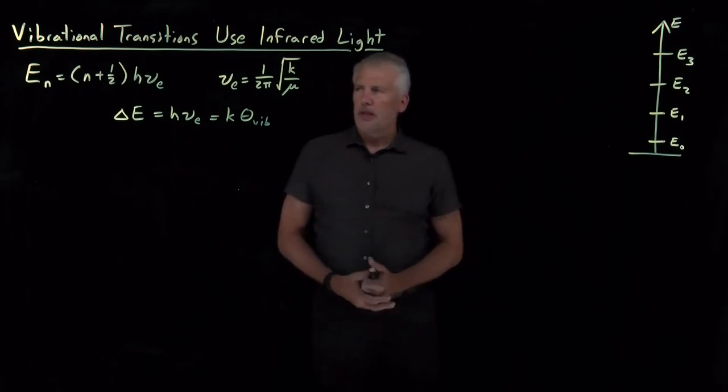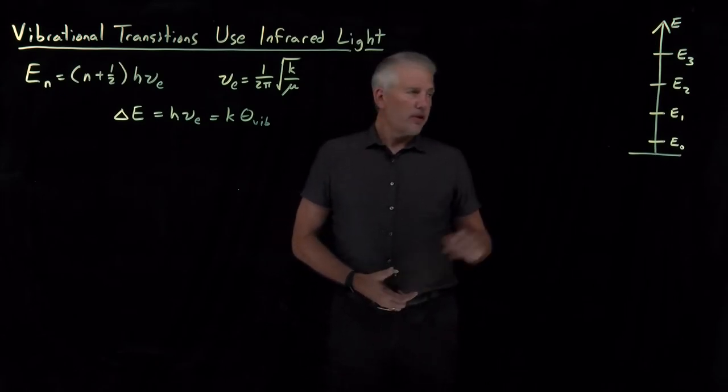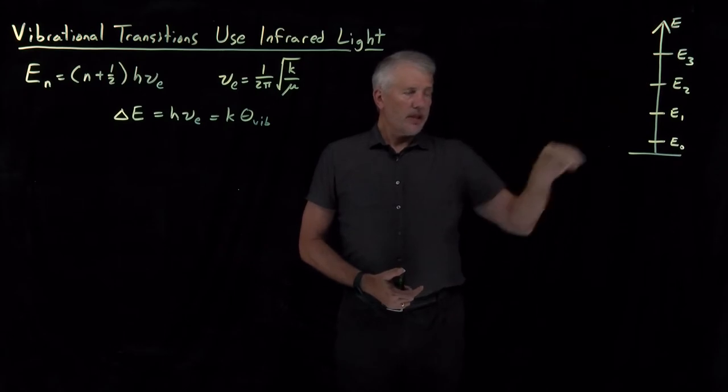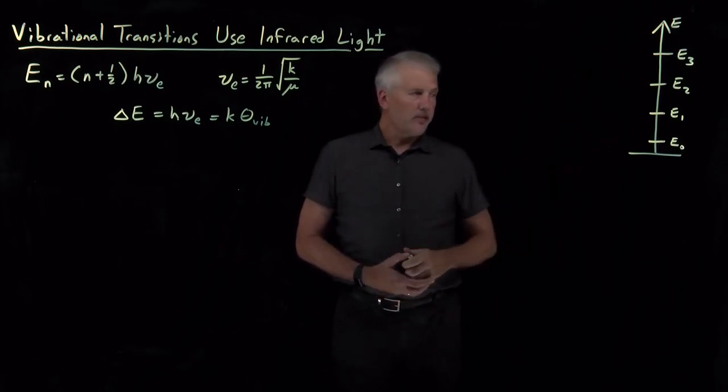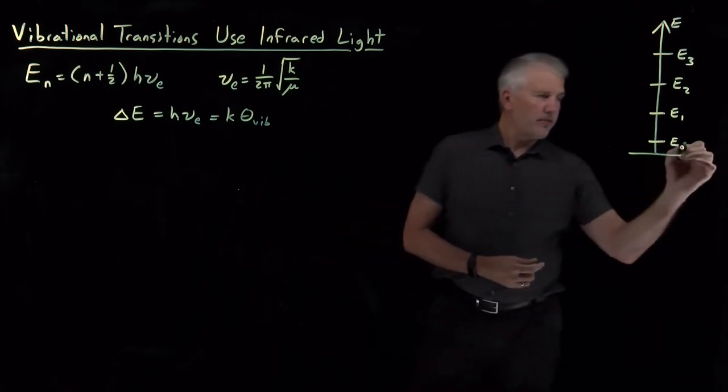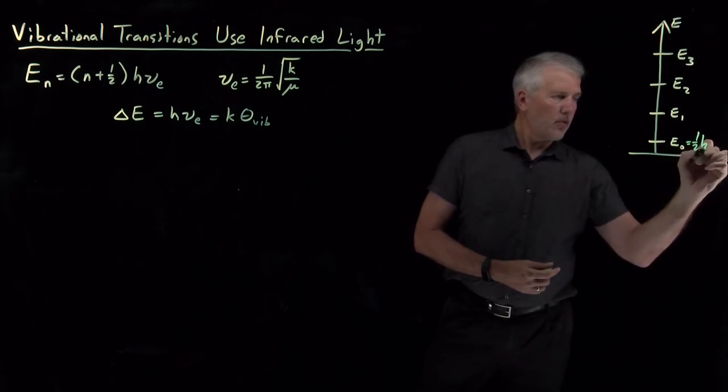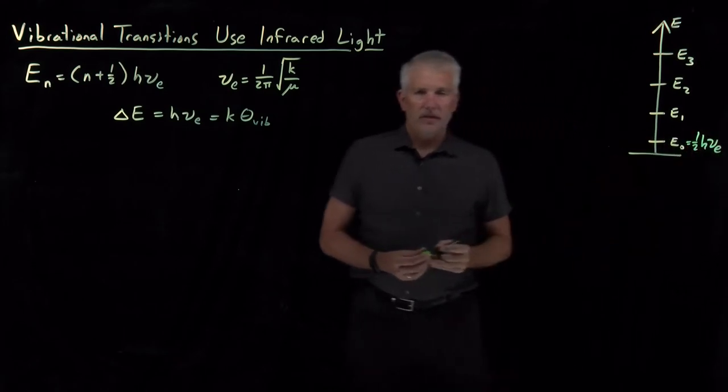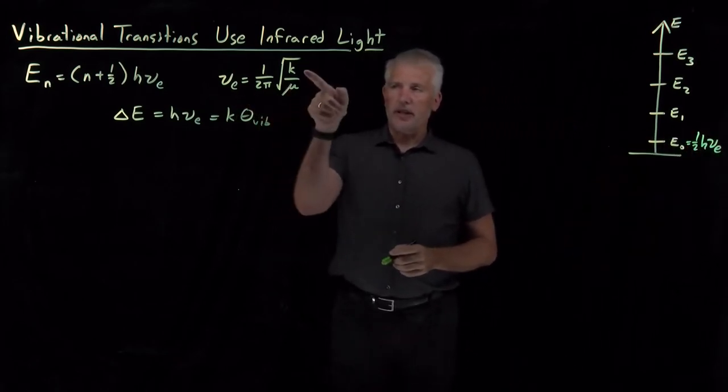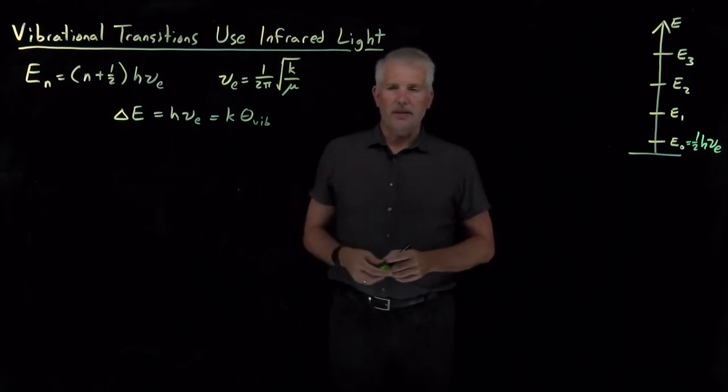All right, so here's what we know about the harmonic oscillator so far. We know there's equally spaced energy levels, starting with the ground energy level that has an energy of one-half h nu, where nu is the fundamental vibrational frequency. We can calculate that if we know the spring constant and the reduced mass of the molecule.